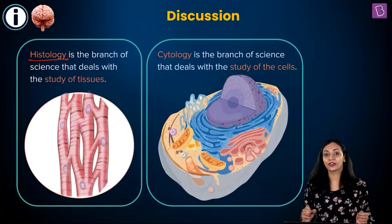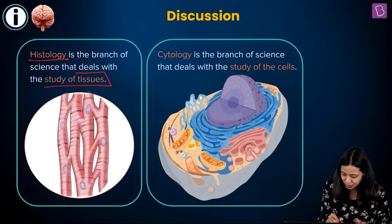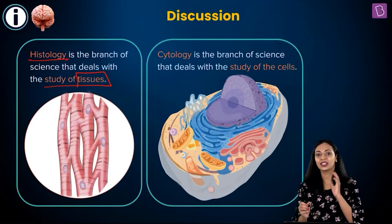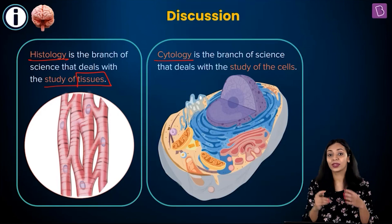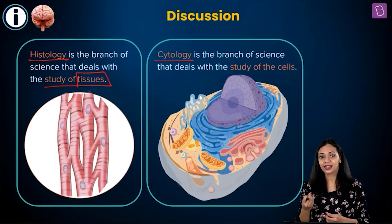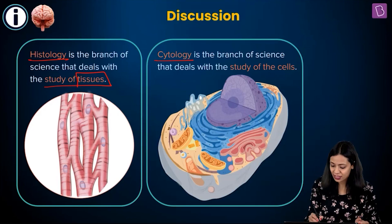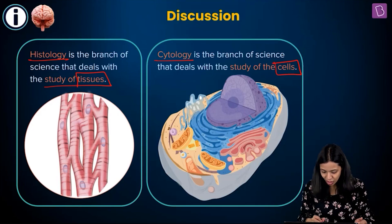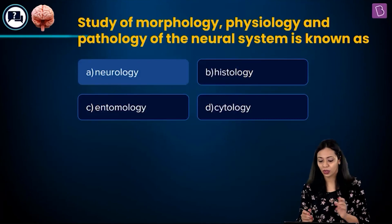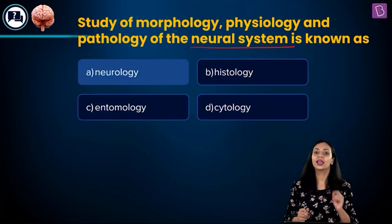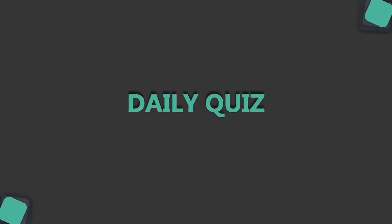Histology is the study of tissues — a branch of biology that deals with the study of tissues. Cytology is a branch of science that deals with the study of cells, since a cell is also known as the cyton. The correct answer to this question is option A, neurology.